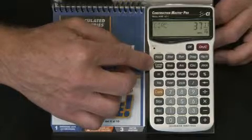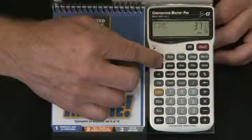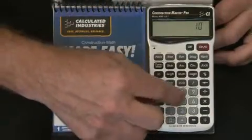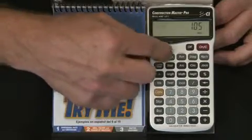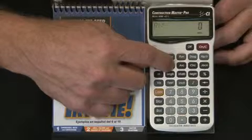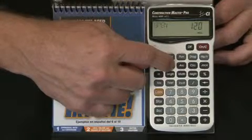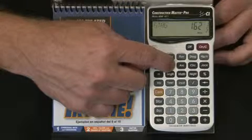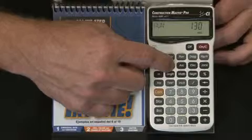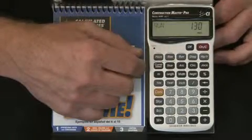One of the most powerful functions is the stair key, which can solve all your stair layout calculations quickly and accurately. You simply enter the total floor-to-floor rise, 105 inch rise, and then start pressing the stair key, which gives you the riser height, number of risers, any adjustment, tread widths, number of treads, any adjustment, stairwell opening, the stringer length, the angle of incline, and the total run of the stairway. This function can save hours of frustrating calculations and stair table lookups.